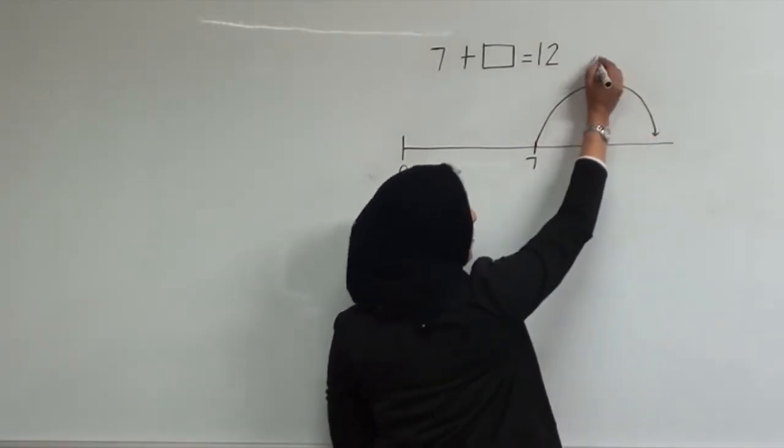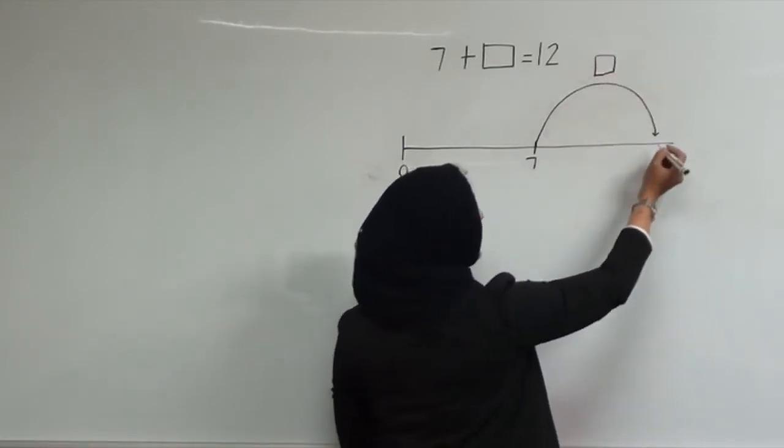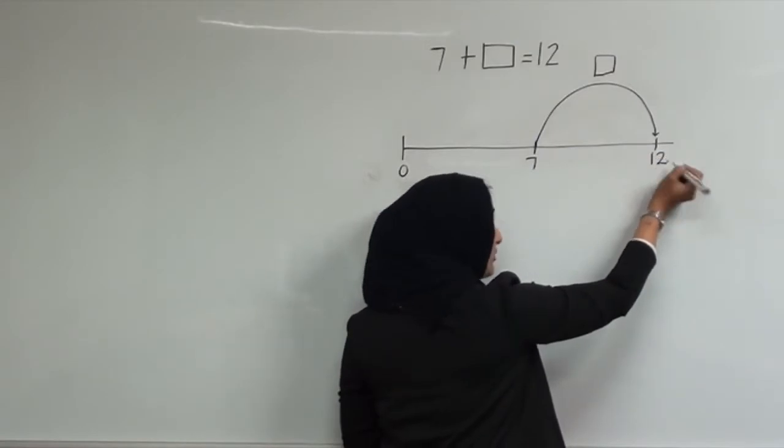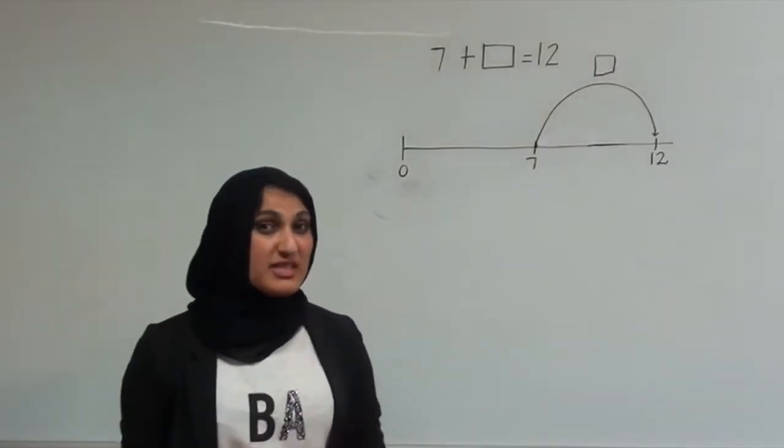We don't know how many I've put into the pot. But what we do know is that we had 12 all together. So now I need to find out how to get from 7 to 12.